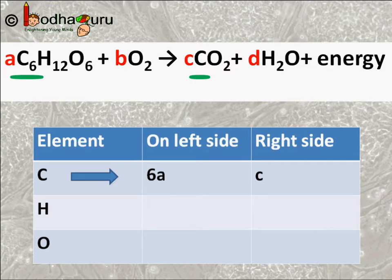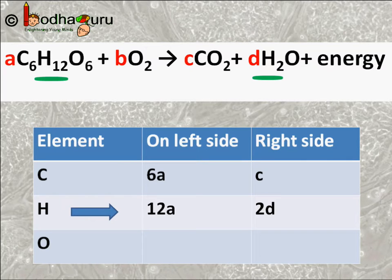Next, the left hand side has 12A hydrogen atoms and this is equal to 2D hydrogen atoms which we get from the water molecules. So simplifying, that is dividing both sides by 2, we get 6A is equal to D.